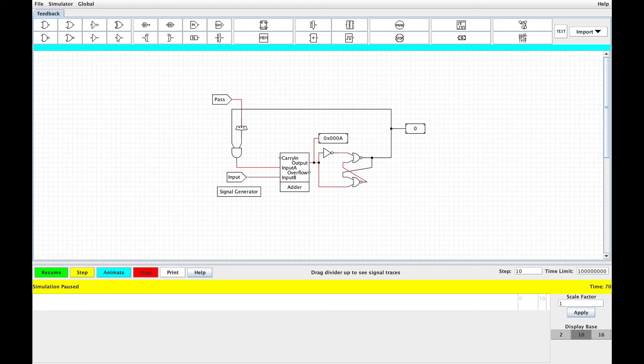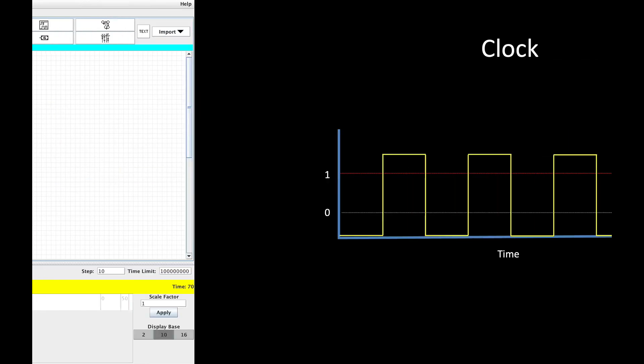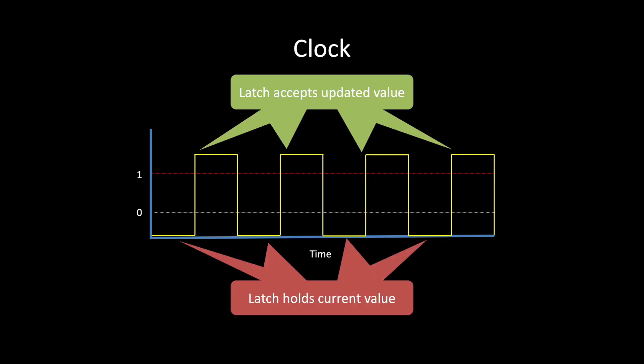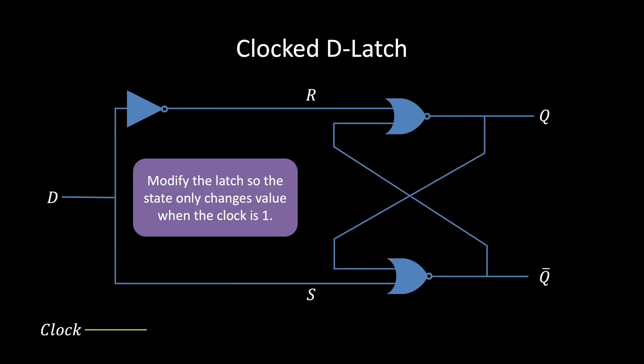A clock is just a device that produces a signal that periodically switches between 0 and 1. We can use this predictable change to control when a latch is allowed to take on a new value, thus guaranteeing that the latch's output remains unchanged. As a first attempt, let's use the clock as a kind of traffic light and allow the D latch to take on a new value only when the clock is 1. Pause the video and figure out how to use logic gates to tie the clock into this D latch so that it only changes when the clock is 1. Here's a hint: remember that there is an SR latch inside of this D latch.